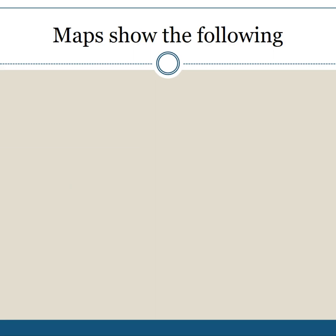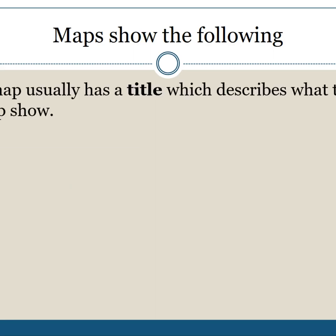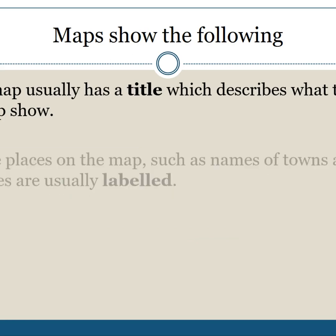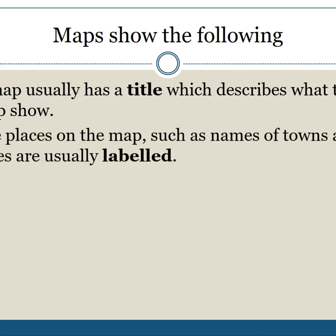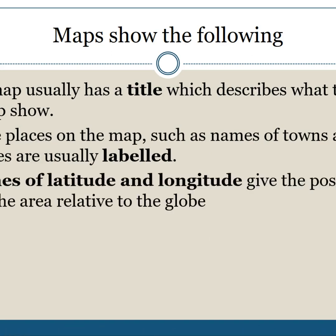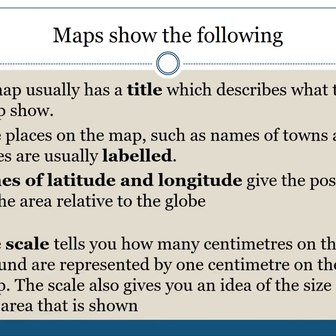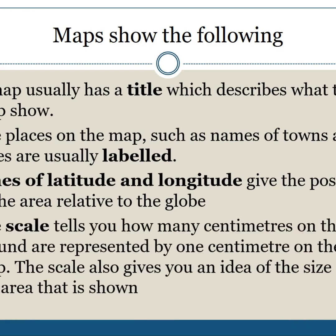Maps show the following. A map usually has a title which describes what the map shows. The places on the map, such as names of towns and cities, are usually labelled. Lines of latitude and longitude give the position of the area relative to the globe. The scale tells you how many centimeters on the ground are represented by one centimeter on the map, and also gives an idea of the size of the area shown.